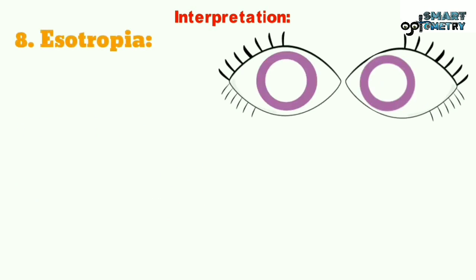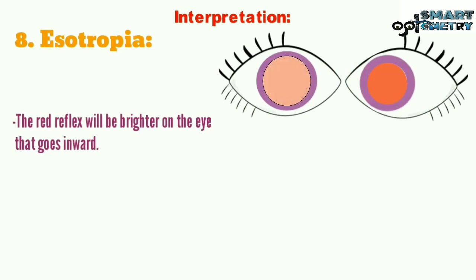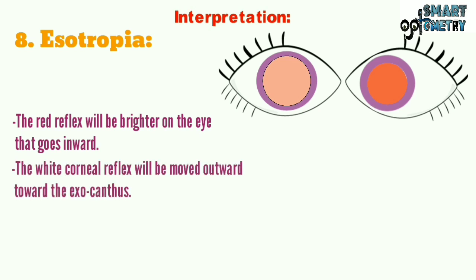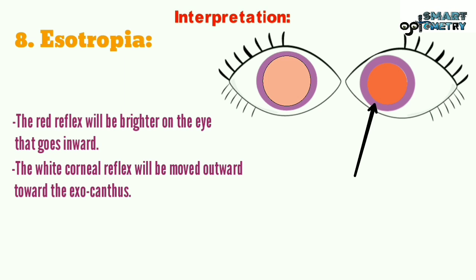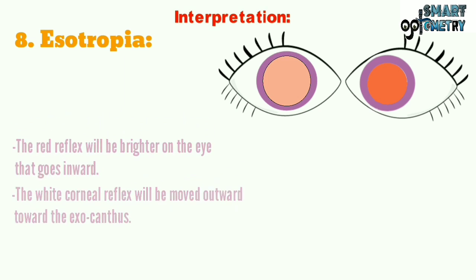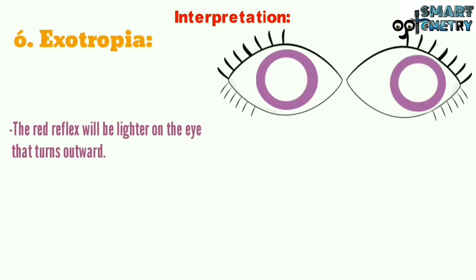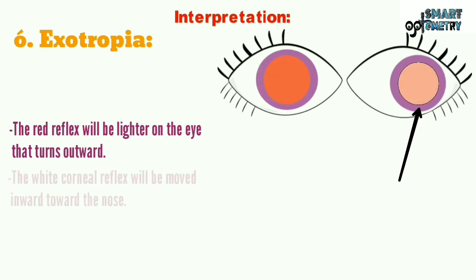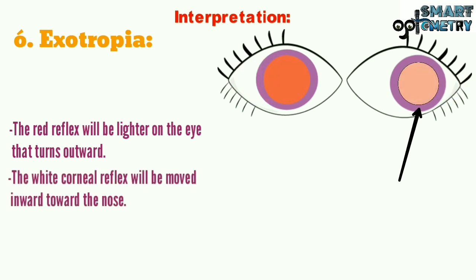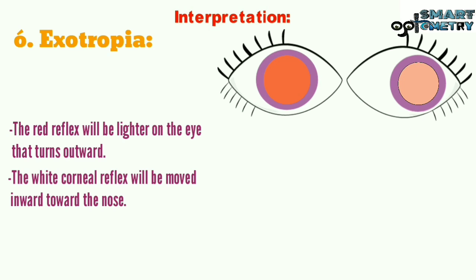8. Esotropia: The red reflex will be brighter on the eye that goes inward. The white corneal reflex will be moved outward toward the exocanthus. 9. Exotropia: The red reflex will be lighter on the eye that turns outward. The white corneal reflex will be moved inward toward the nose.